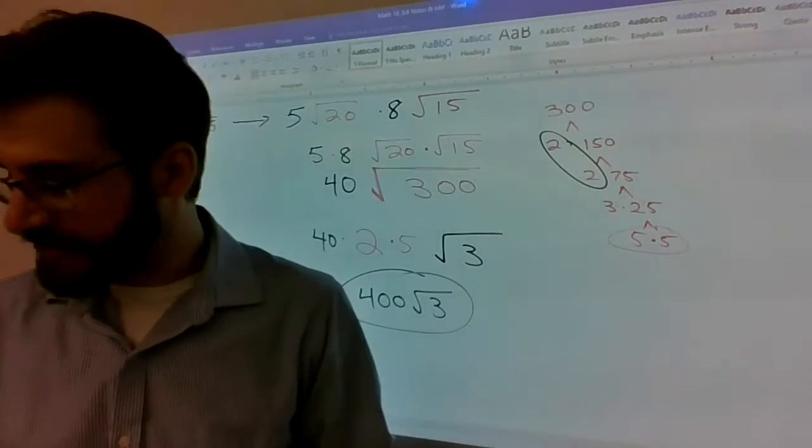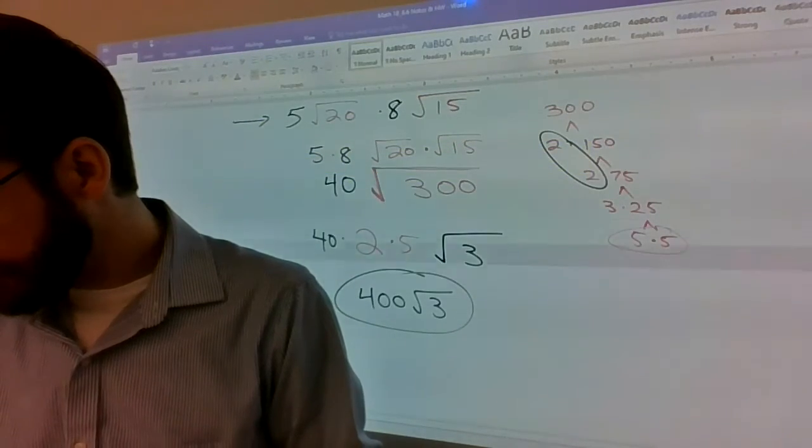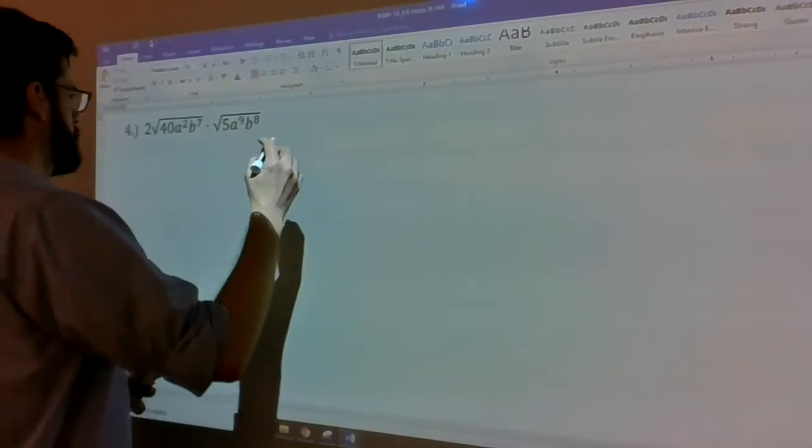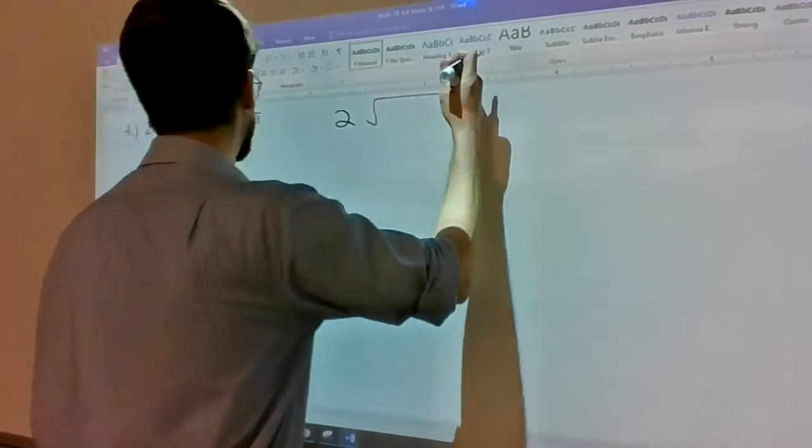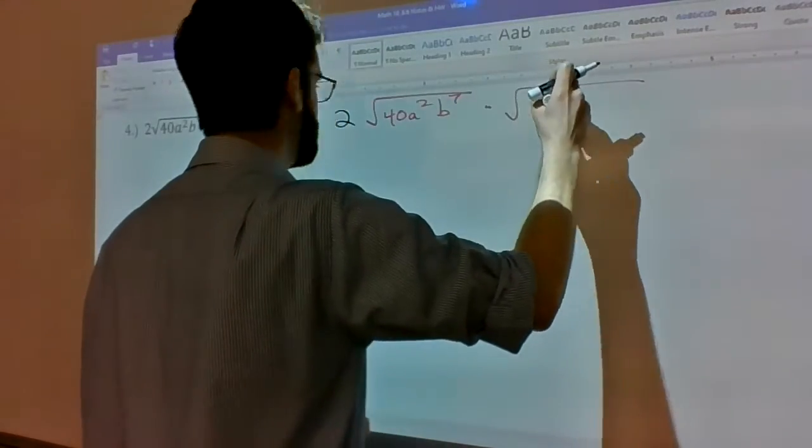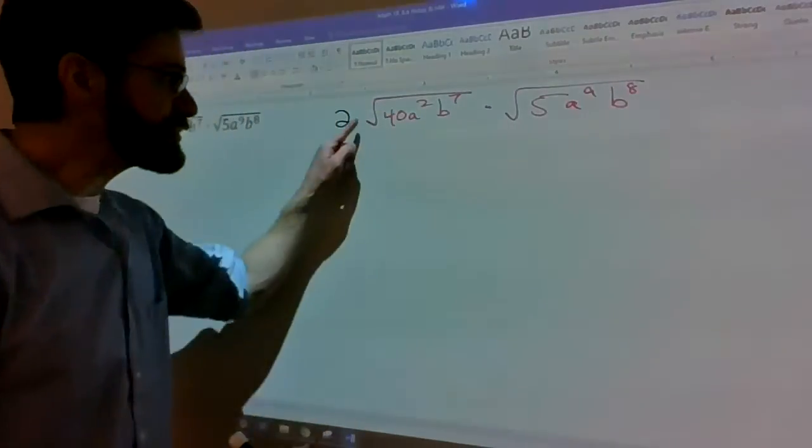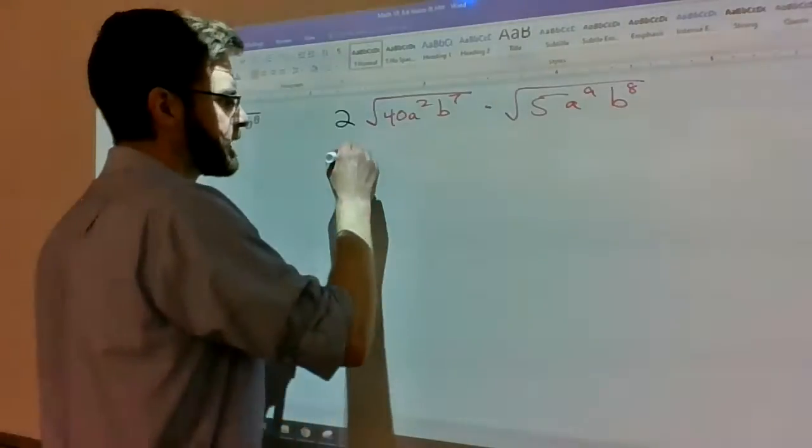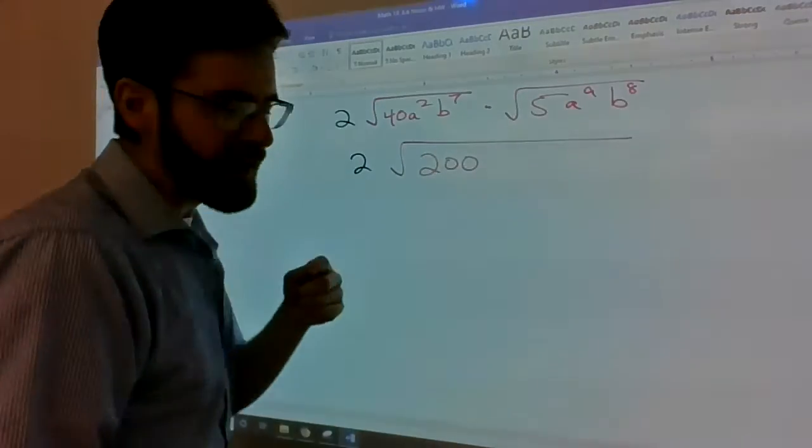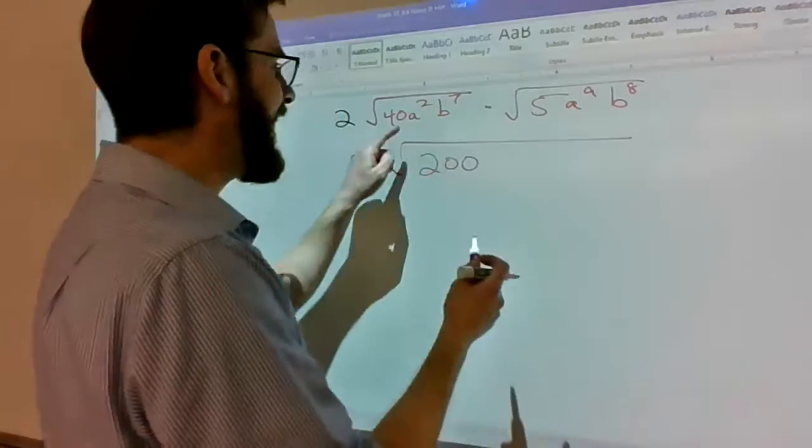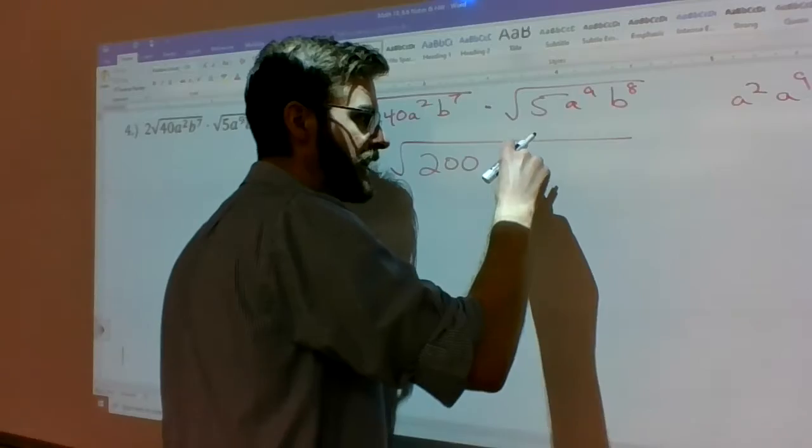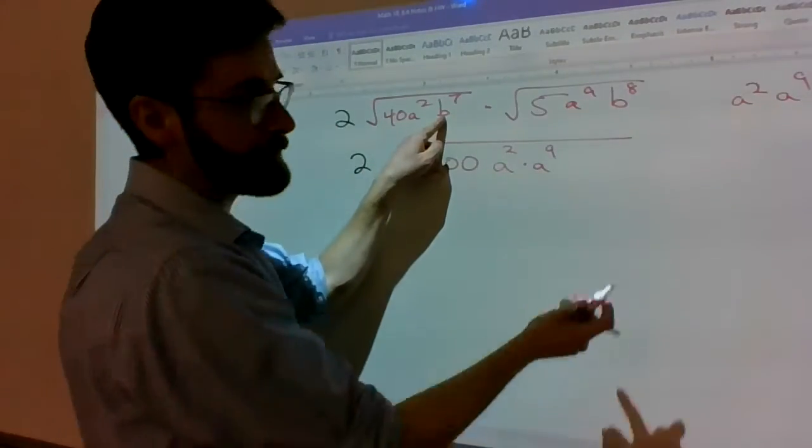Let's see what that looks like if we add variables inside. So we've got 2 root 40 a squared b to the 7 times, no coefficient for the second one, root 5 a to the 9 b to the 8. So the roots are matched. They're both square roots. What you're going to do is you're going to multiply 40 times 5, which is 200. And then we've got to go back to some properties that we talked about first semester. How do I take a to the 2 times a to the 9? Right now there's a to the 2 times a to the 9 underneath the root now. And b to the 7 times b to the 8 underneath the root.